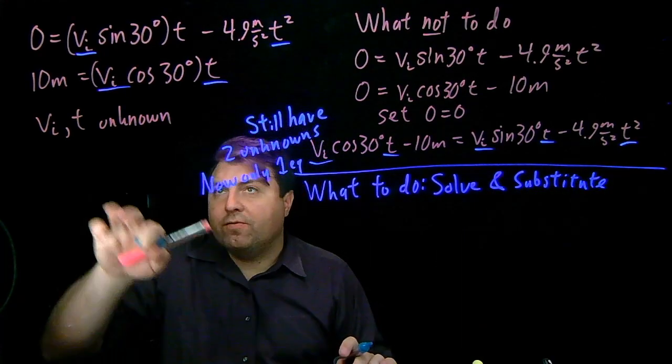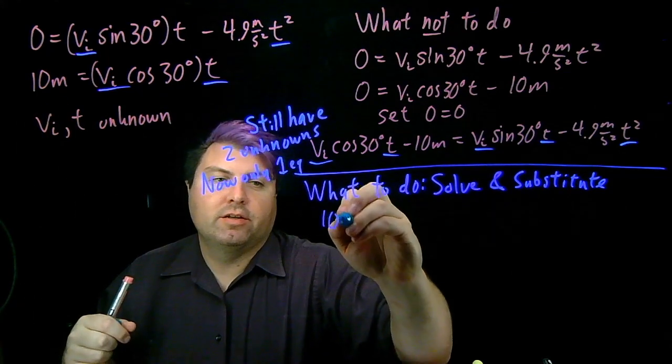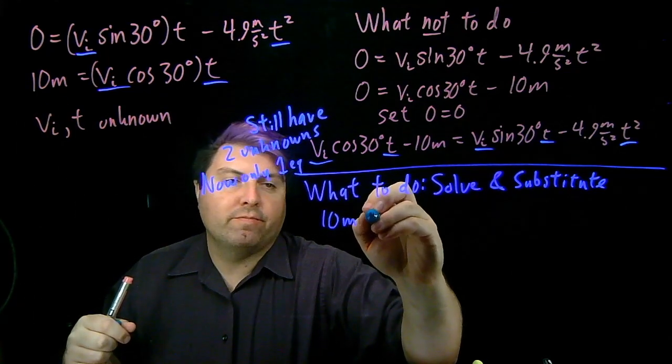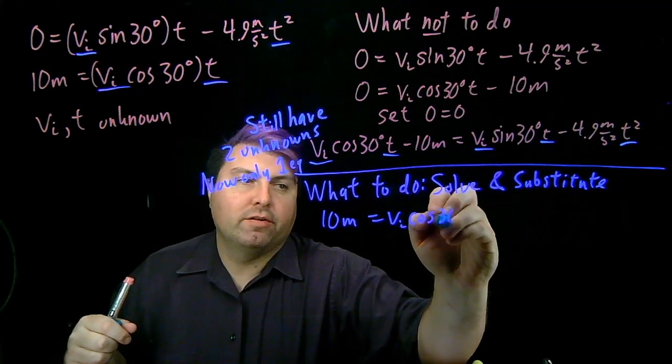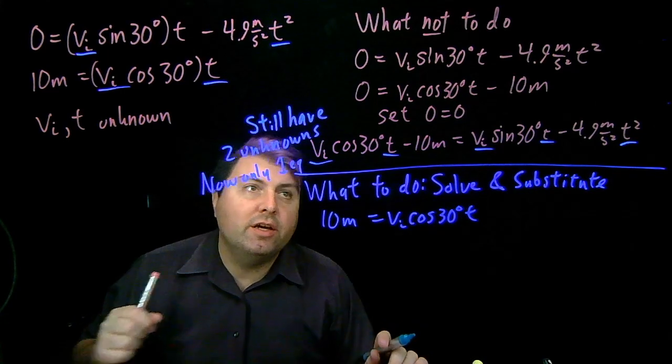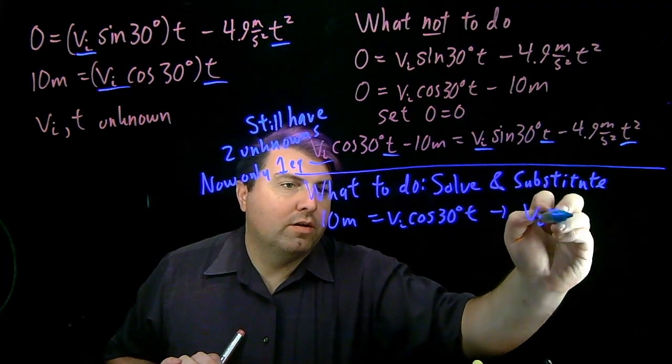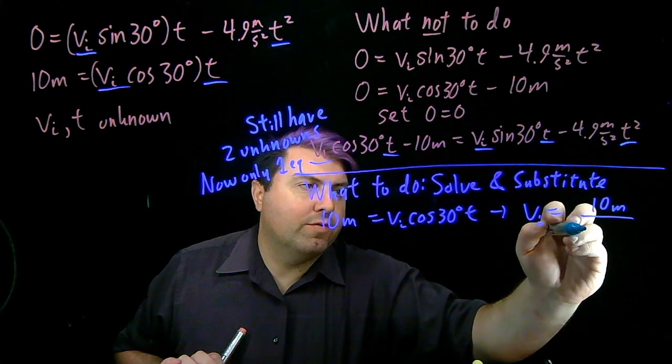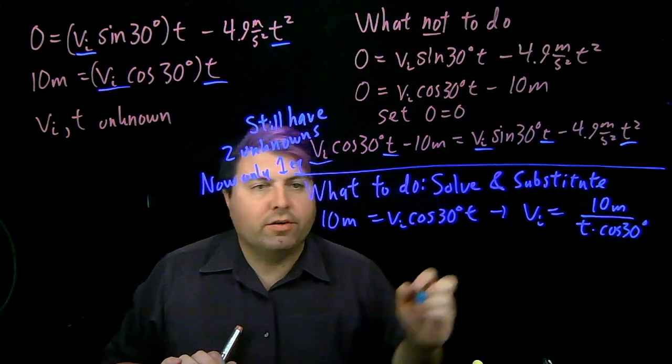I want to solve for one of these unknowns, so maybe in here I can take a look at 10m = vi cos 30° t, and I could solve for vi. So this would give me vi = 10m / (t cos 30°).